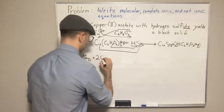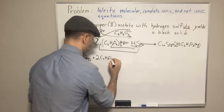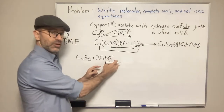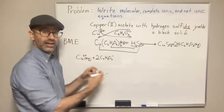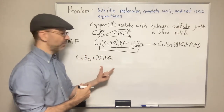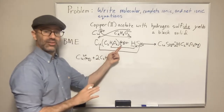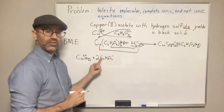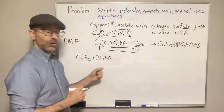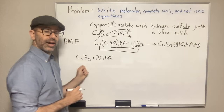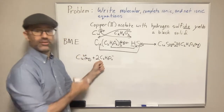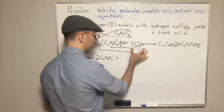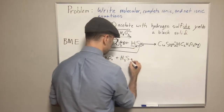We have 2 acetate ions because we don't keep the subscript — keeping it would imply the 2 ions are stuck together in some molecule, which isn't what's happening. The subscript just indicates the number of ions in our ionic formula, and these ions are actually separated, floating around. For every 1 copper ion floating around, there are 2 acetate ions, maintaining balanced neutral charge. H₂S is a gas, so we keep that together.